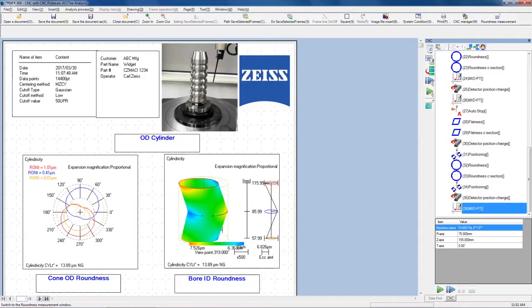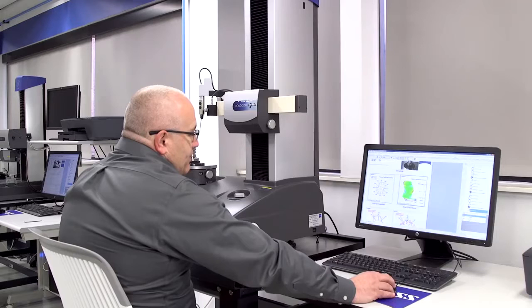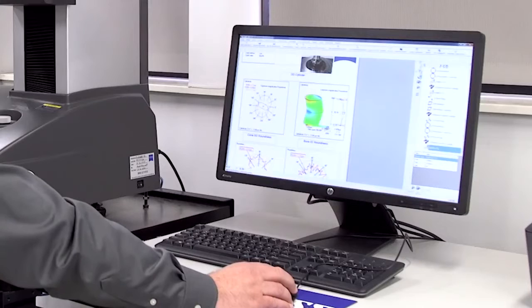If we look at some of the measurements that we have performed today, we have our outer diameter cylindricity. We show it here in a 2D plane, also in a 3D plane. We can also at any time adjust this 3D plane to see the optimal view from a three-dimensional standpoint.